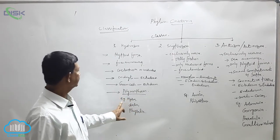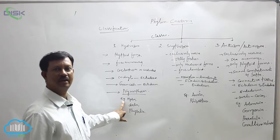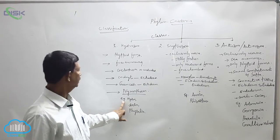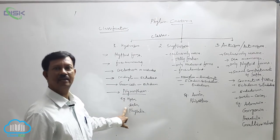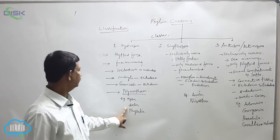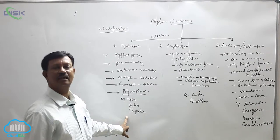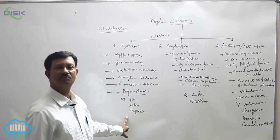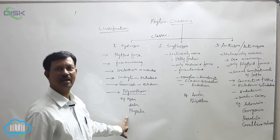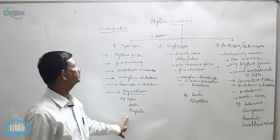Examples of Hydrozoa are Hydra, a freshwater polyp, and Obelia, commonly known as sea fur, found in marine water. Another example is Physalia, known as the Portuguese man-of-war.